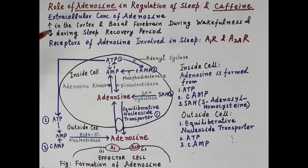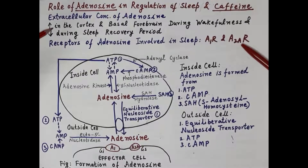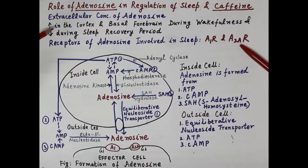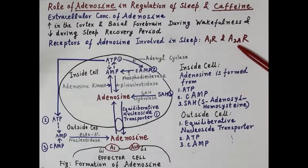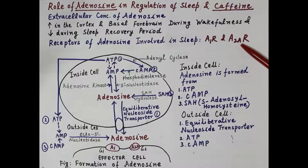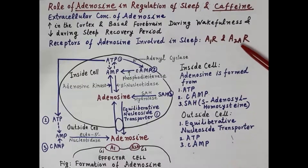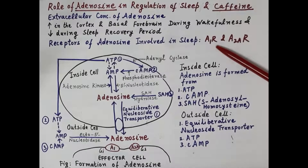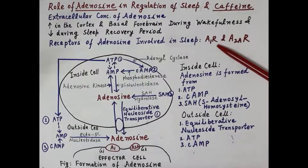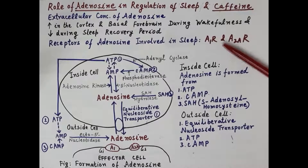This adenosine binds to its two receptors — the A1 receptor and the A2A receptor — and induces sleep. The role of the adenosine A2A receptor is comparatively more predominant compared to the A1 receptor in the induction of sleep.